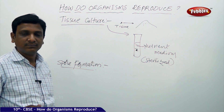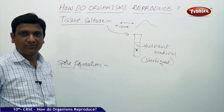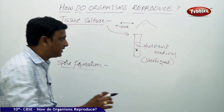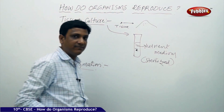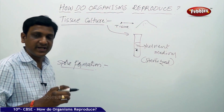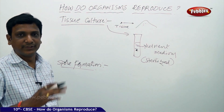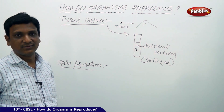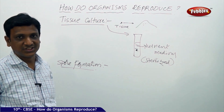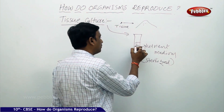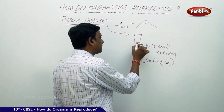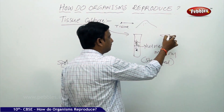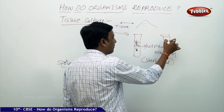The tissue is treated so that no bacteria or fungus can affect it, and it is kept in a nutrient medium which provides the nutrients. The total setup is kept in hygienic, non-infectious conditions. Then the tissue will grow into a new plant, after which the plant can be potted — kept in a pot.